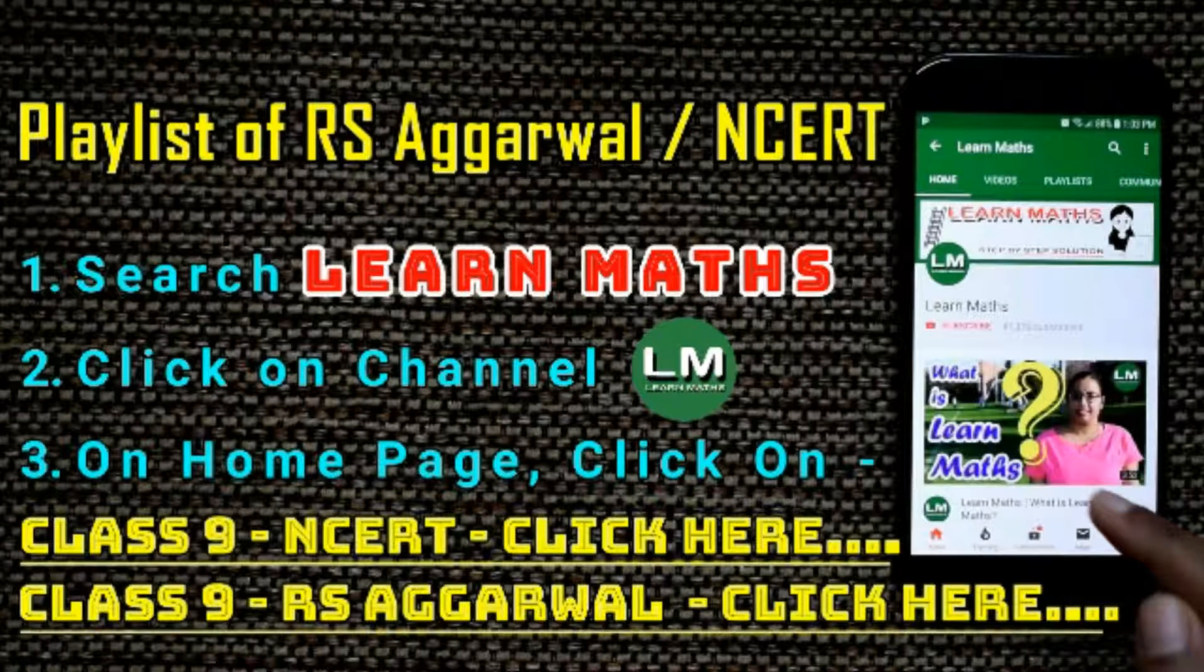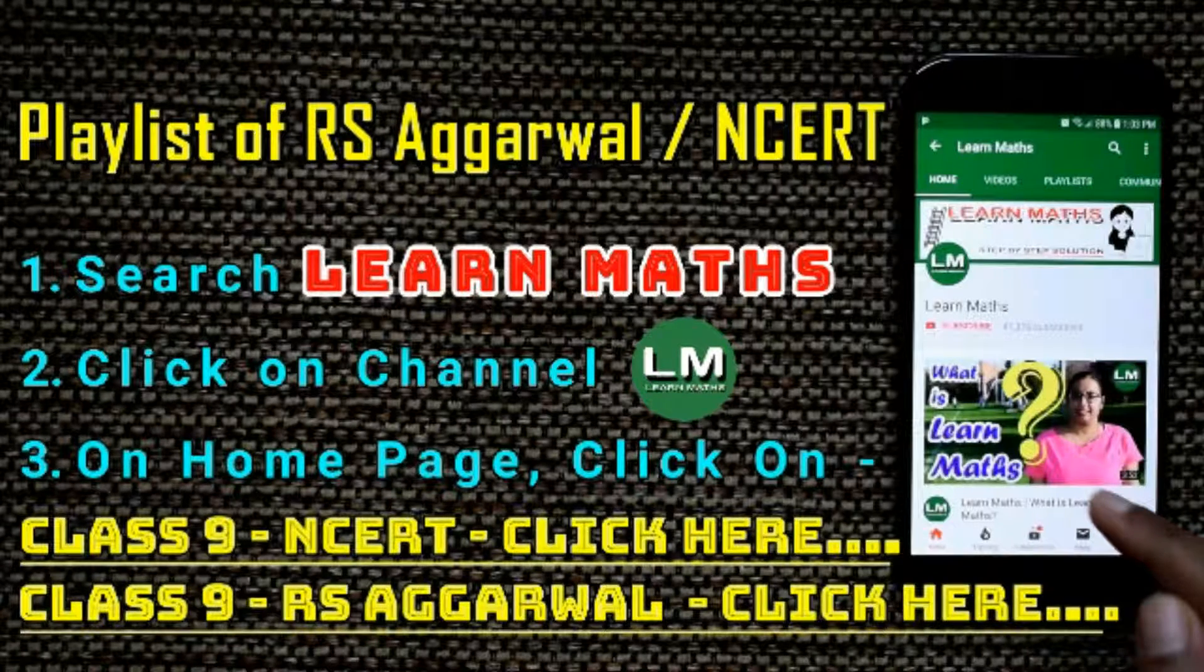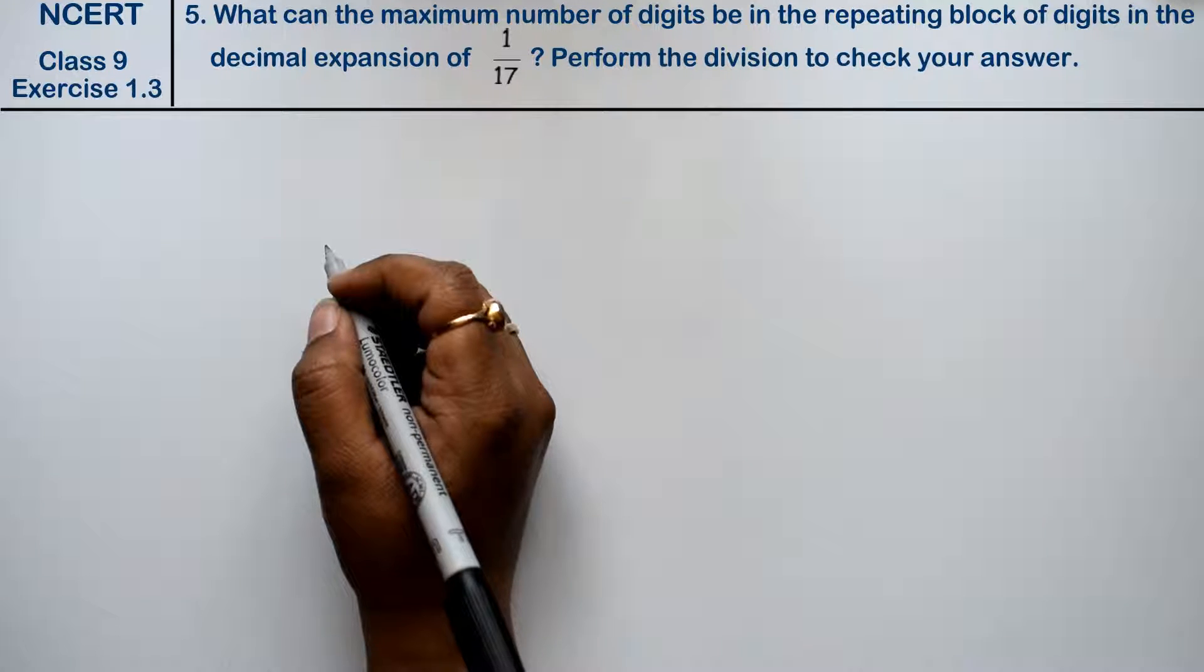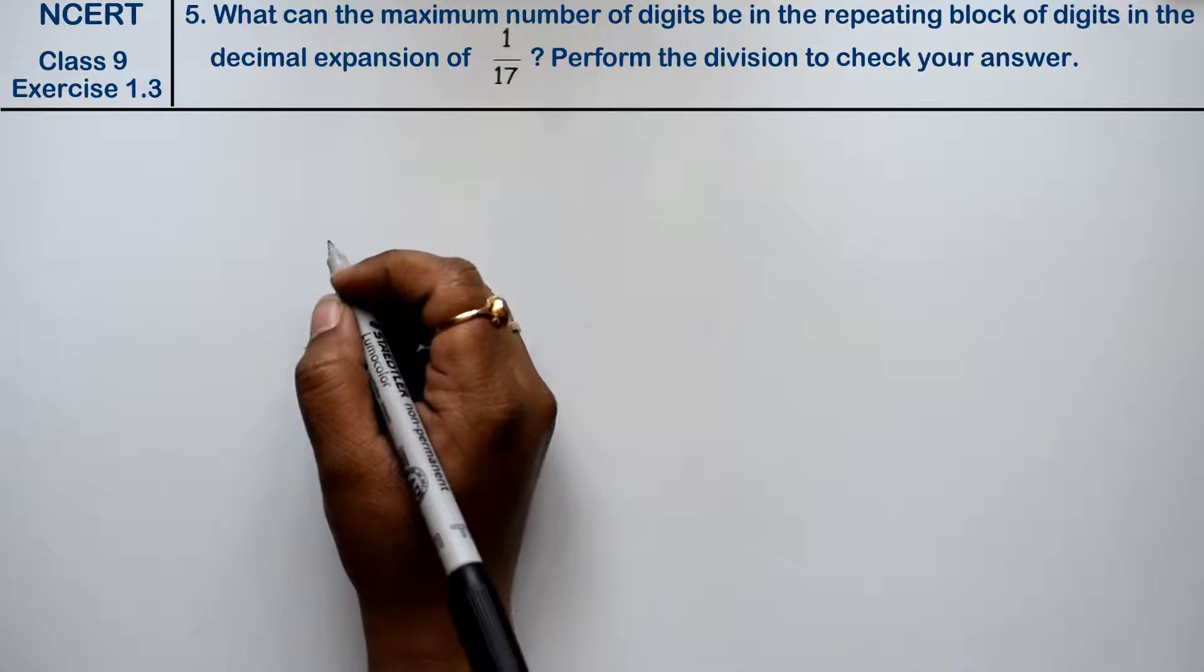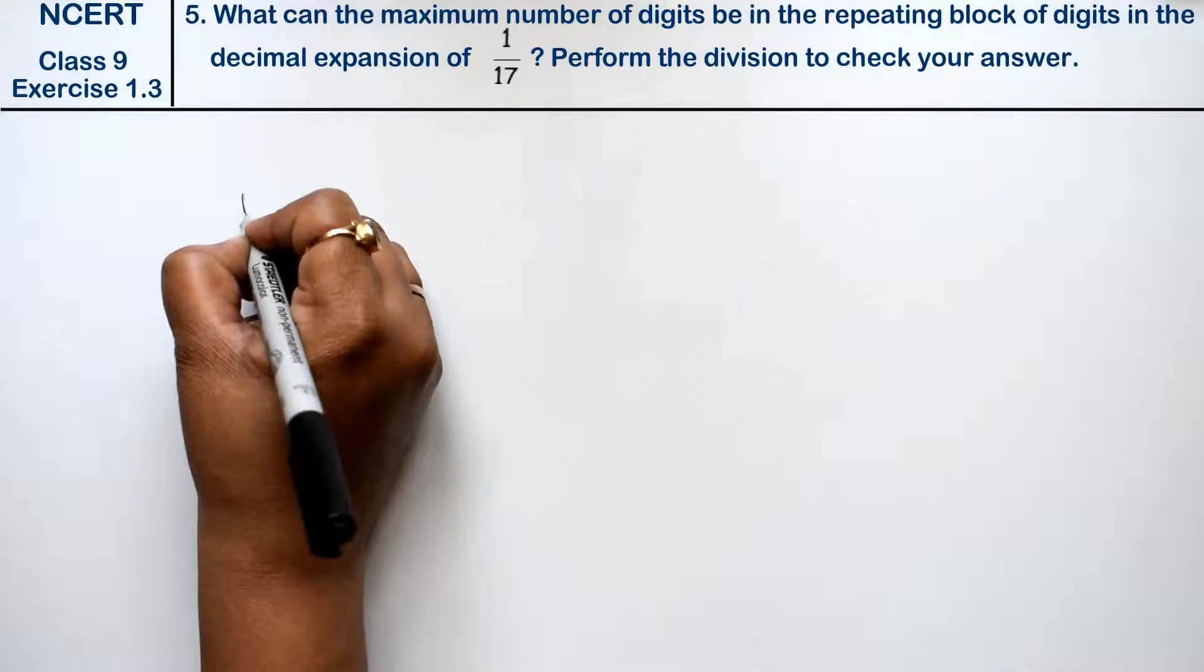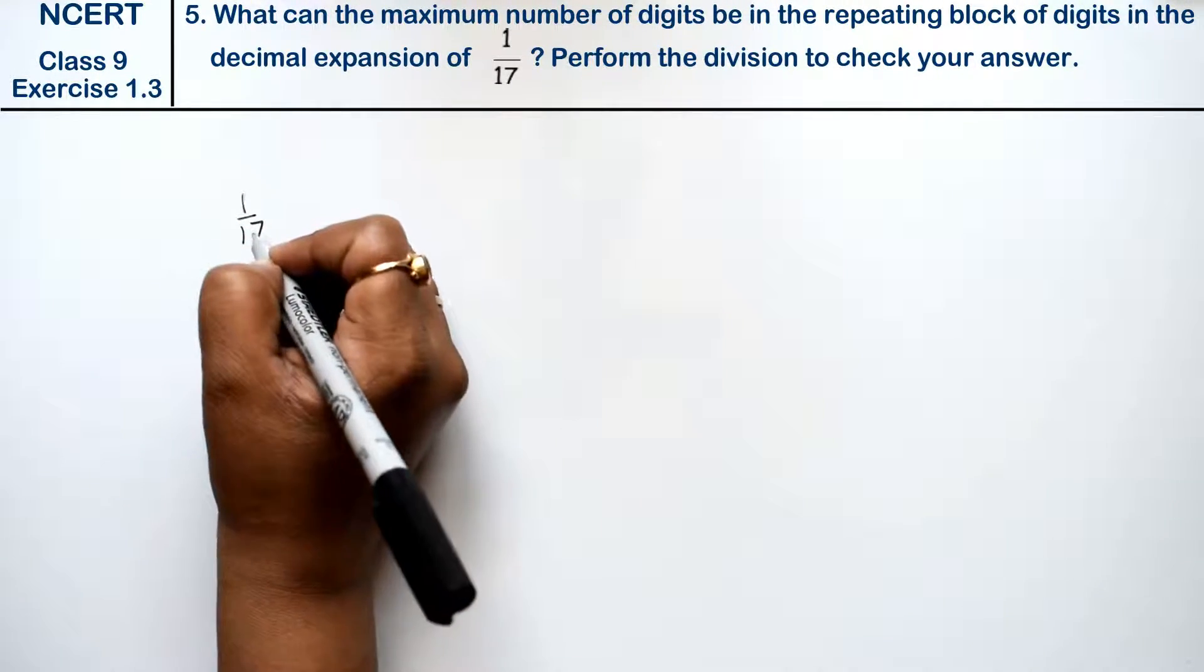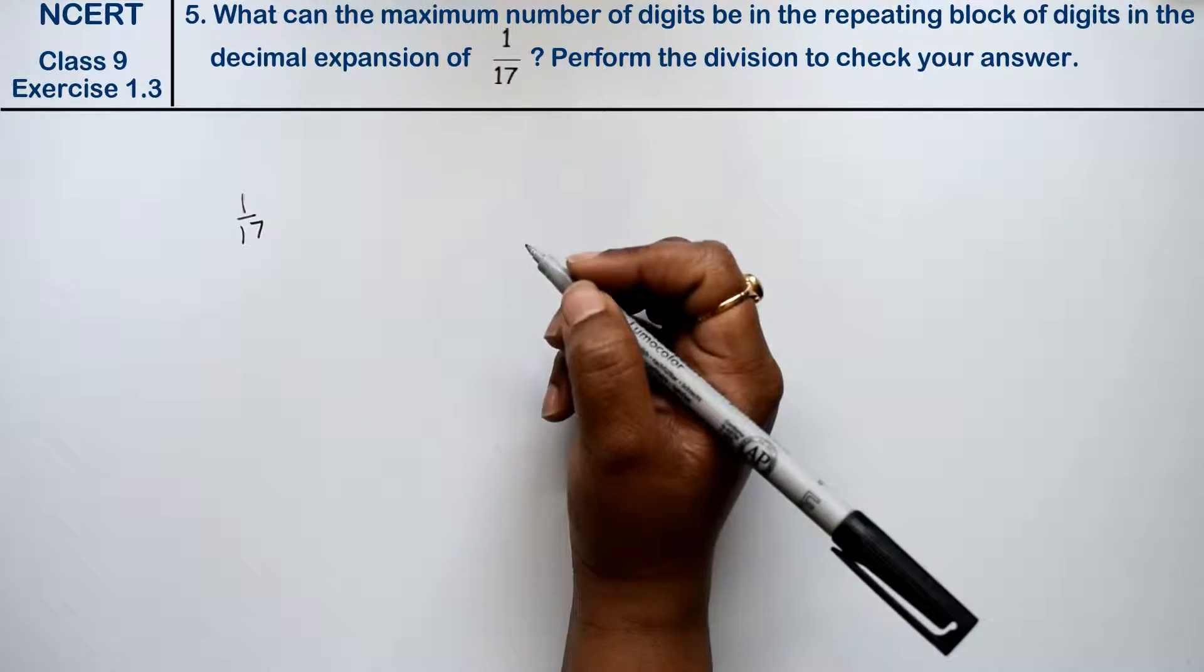Let's do question number 5 of exercise 1.3, the number system. Question number 5 is: What can the maximum number of digits be in the repeating block of digits in the decimal expansion of 1 upon 17? Perform the division to check your answer.